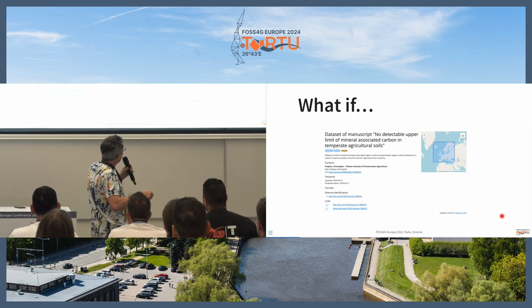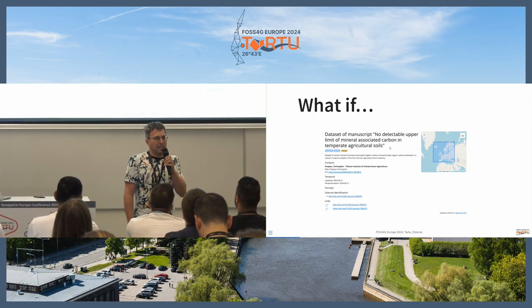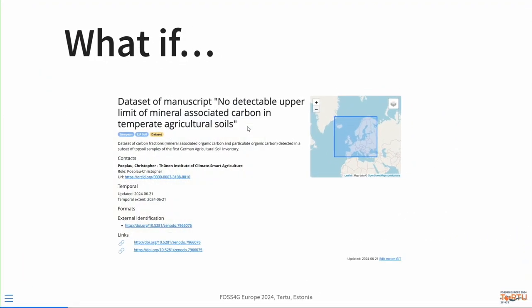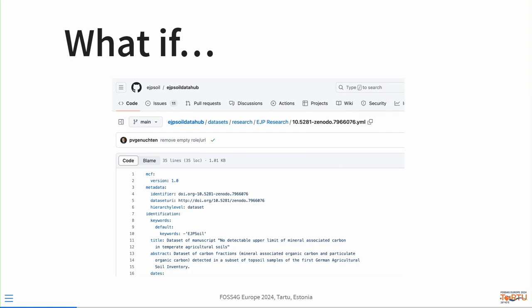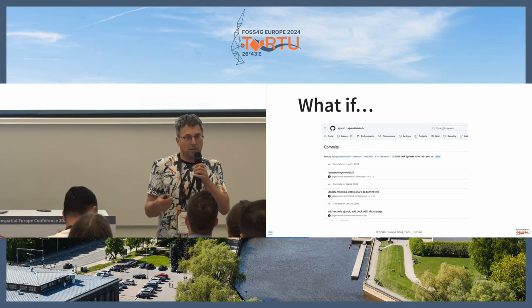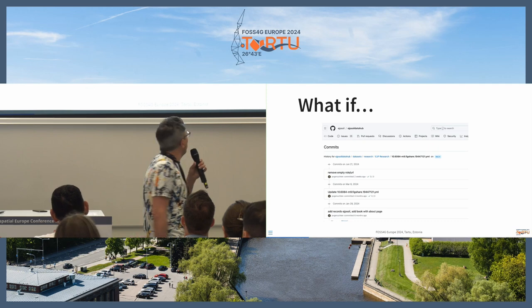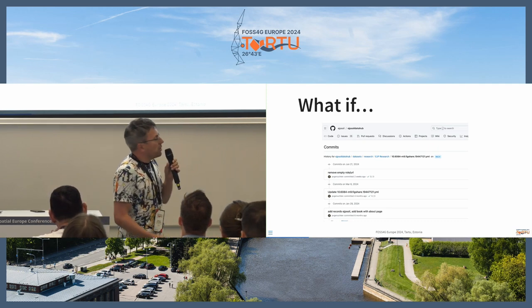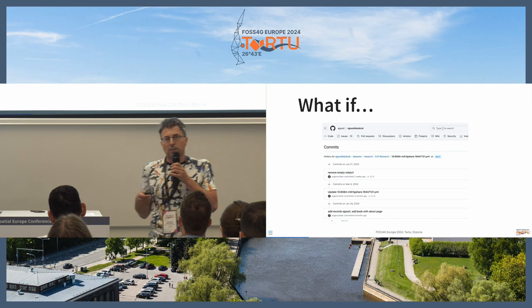It would be really nice if there were an 'edit me on Git' link, which you typically find on mkdocs-type documentation websites. You would click that, go into Git, and be able to make a pull request or create an issue. Somebody would go in and change it, review it, and it would be published to the catalog again. It would also give you a nice overview of who changed what in the catalog over the last 20 years, because a lot of these datasets stay in the catalog for a long time. So that was kind of the original goal of this exercise — to have a workflow like this.